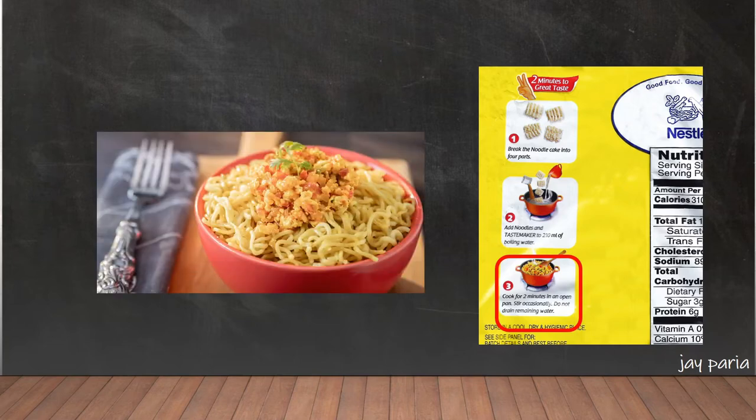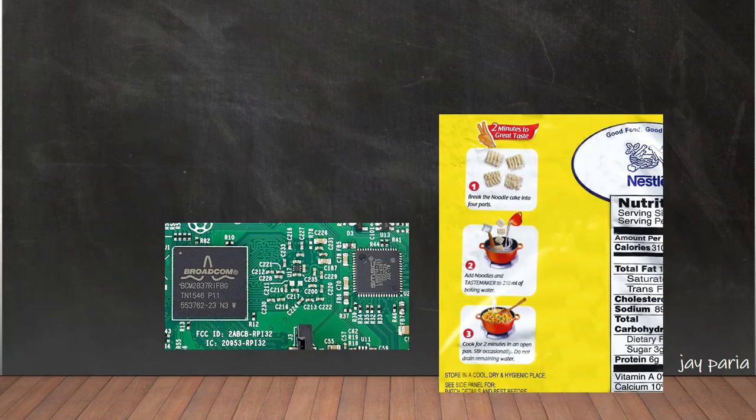Why is this example so important? Because the function of the microprocessor is quite similar. To understand, let's see all the steps you did to perform the first instruction. To perform the first instruction, you read that instruction—to break the noodles. After reading, you try to understand that this is noodles and you have to break it into several parts.